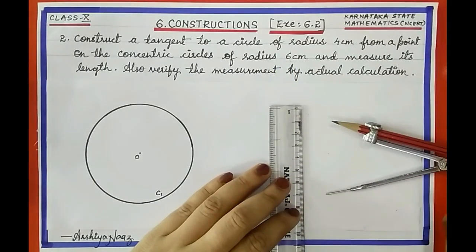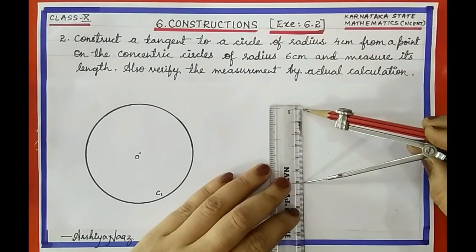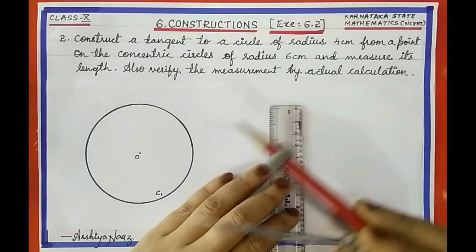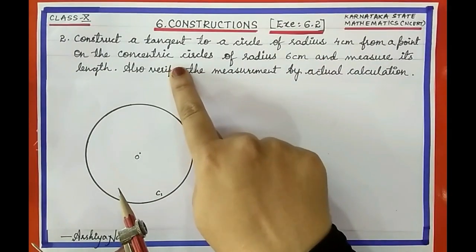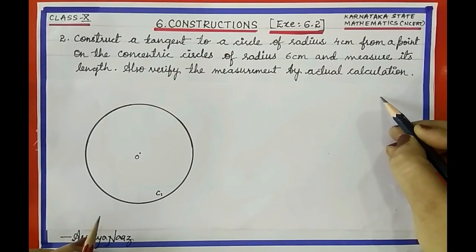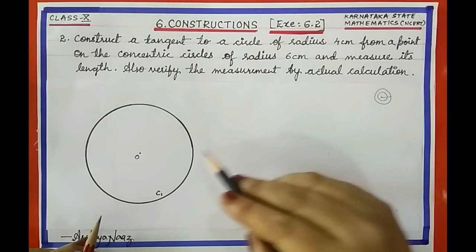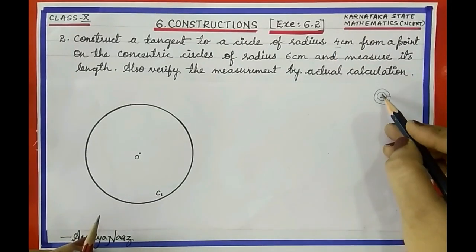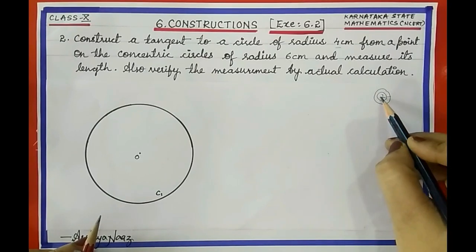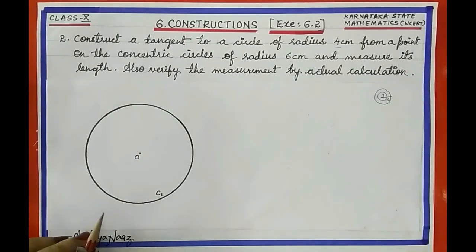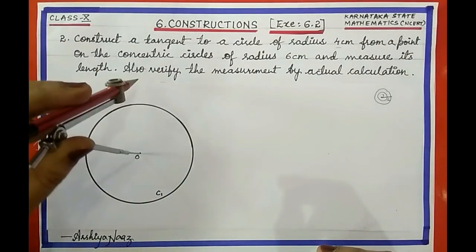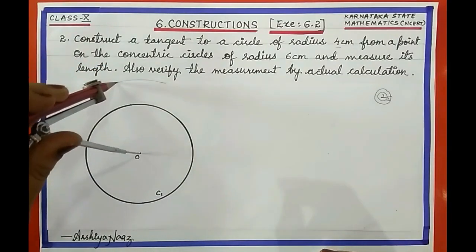Then we have to draw another circle with radius 6 centimeter. Adjust the compass to radius 6 centimeter. The two circles are concentric — concentric means circles whose center is the same but radius is different. We already constructed circle C1 of radius 4 centimeter, and now we want another circle of radius 6 centimeter. So with radius equal to 6 centimeter, draw a circle with center O.